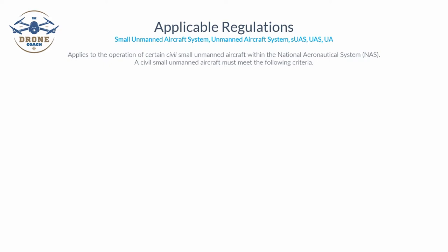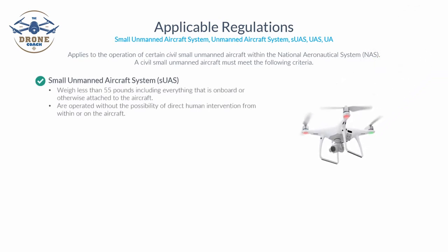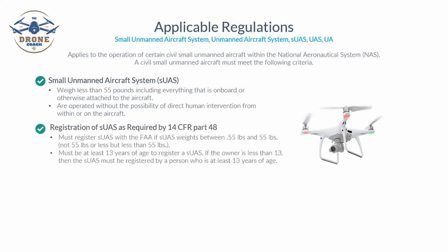A civil small unmanned aircraft must meet the following criteria: it must weigh less than 55 pounds including everything on board or attached to the aircraft, including cameras or payloads. It must be operated without the possibility of direct human intervention from within or on the aircraft. It must be registered with the FAA according to 14 CFR Part 48, and must be registered if it weighs between 0.55 pounds and 55 pounds — that is, less than 55 pounds.